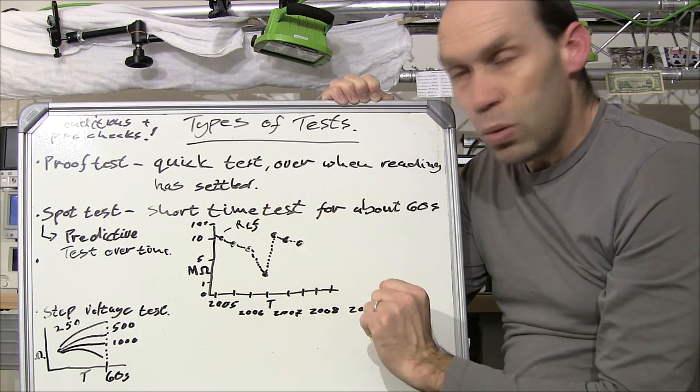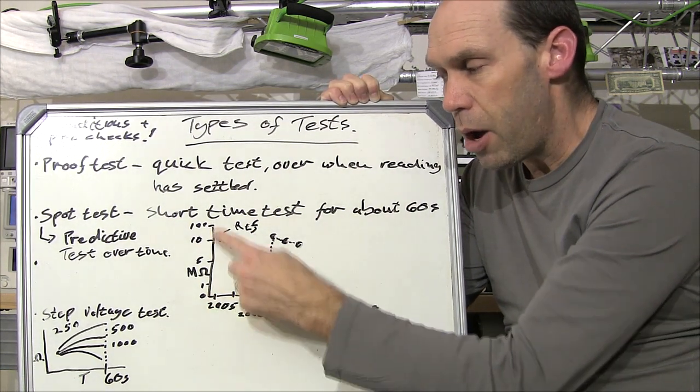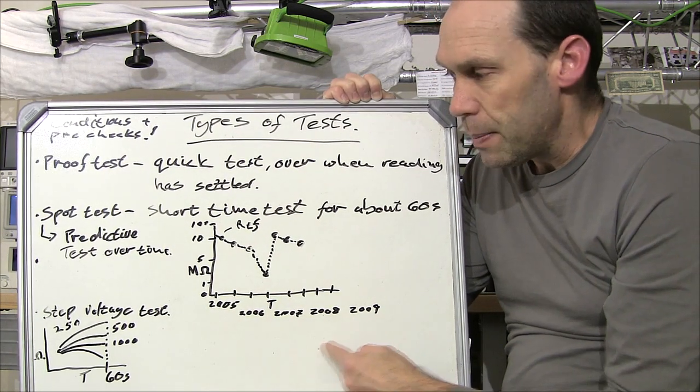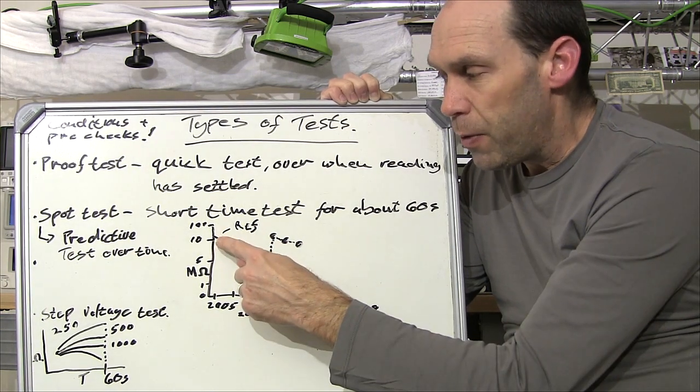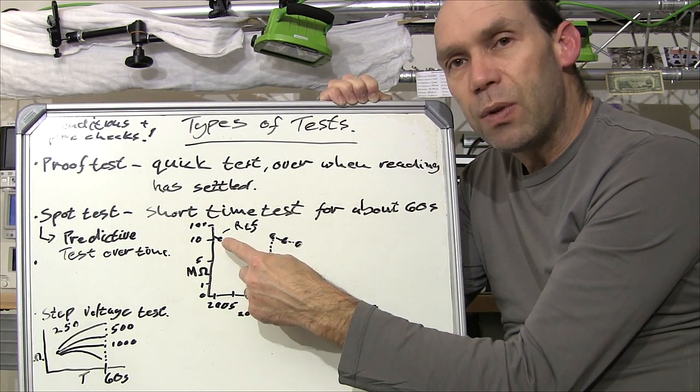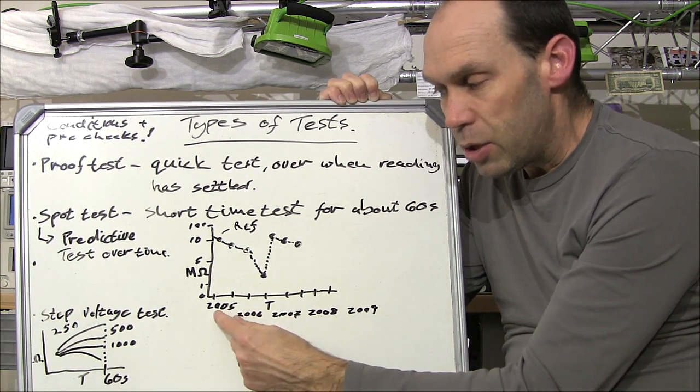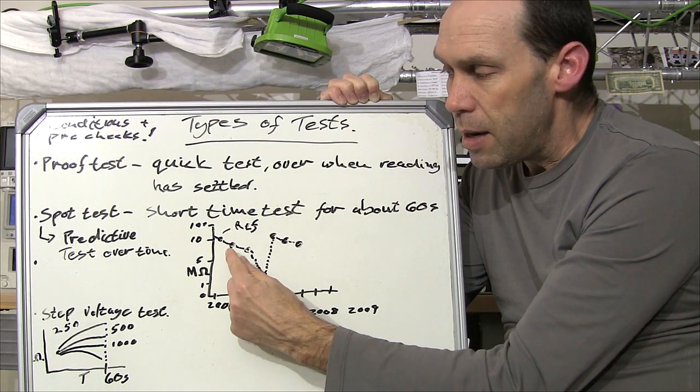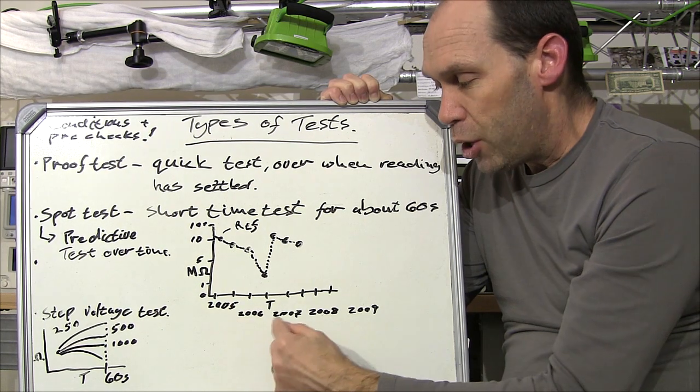So you do that when you first install the motor and on this graph over here we've got a graph of let's say the mega ohms versus time in years. So you'd graph your first reference reading when you first installed it to see what the readings for the installation are in mega ohms and you'd note that let's say in 2005.